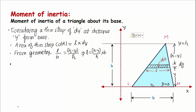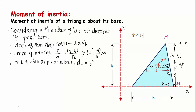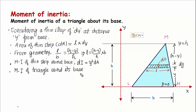Now we want to find the moment of inertia of the triangle about the base. First I will find the moment of inertia of this thin strip about the base. The moment of inertia of the thin strip is a small quantity dI, and that equals y² · dA, where y is the distance of the strip from the base.